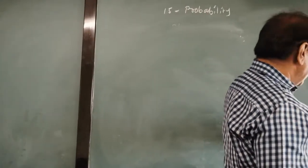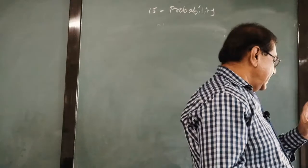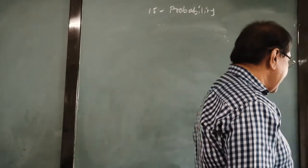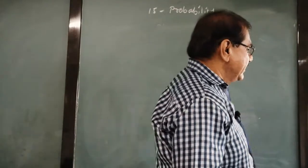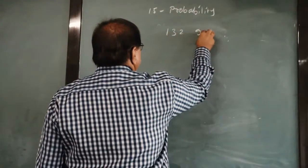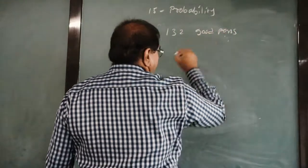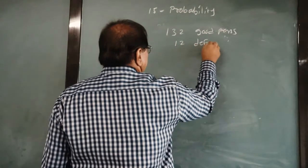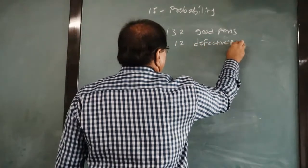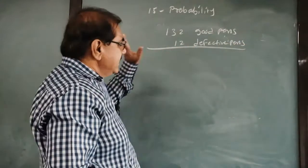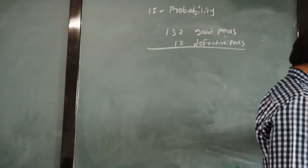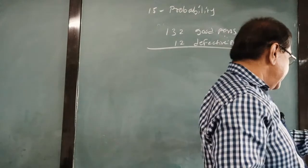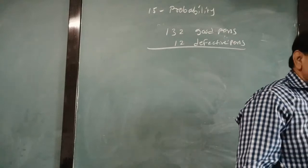Now we take one more and you can understand how to find the probability. Suppose question number 16 I take. 12 defective pens are accidentally mixed with 132 good ones. 132 good pens are there. In that, by mistake, 12 defective pens are mixed accidentally, not purposefully, it is mixed up.